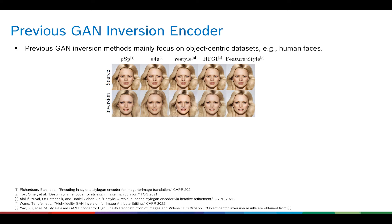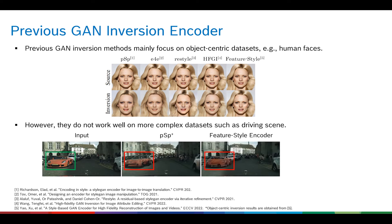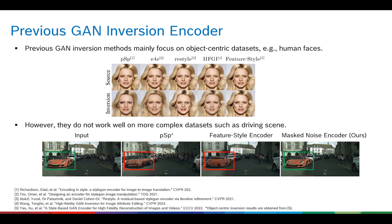Previous GAN inversion encoders mainly focused on object-centric datasets such as human faces. However, we found that they do not work well on more complex scene-centric datasets such as driving scene datasets — the content details are not well-preserved. By contrast, our mask noise encoder has better reconstruction quality and higher fidelity.